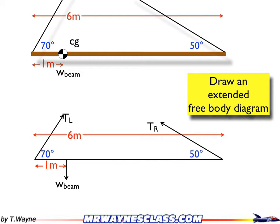So that point that I'm going to work about, called the pivot point, the fulcrum, or the axis of rotation, I'm just going to randomly choose a point 2 meters from the right-hand side. So that's where I'm going to find the torques.